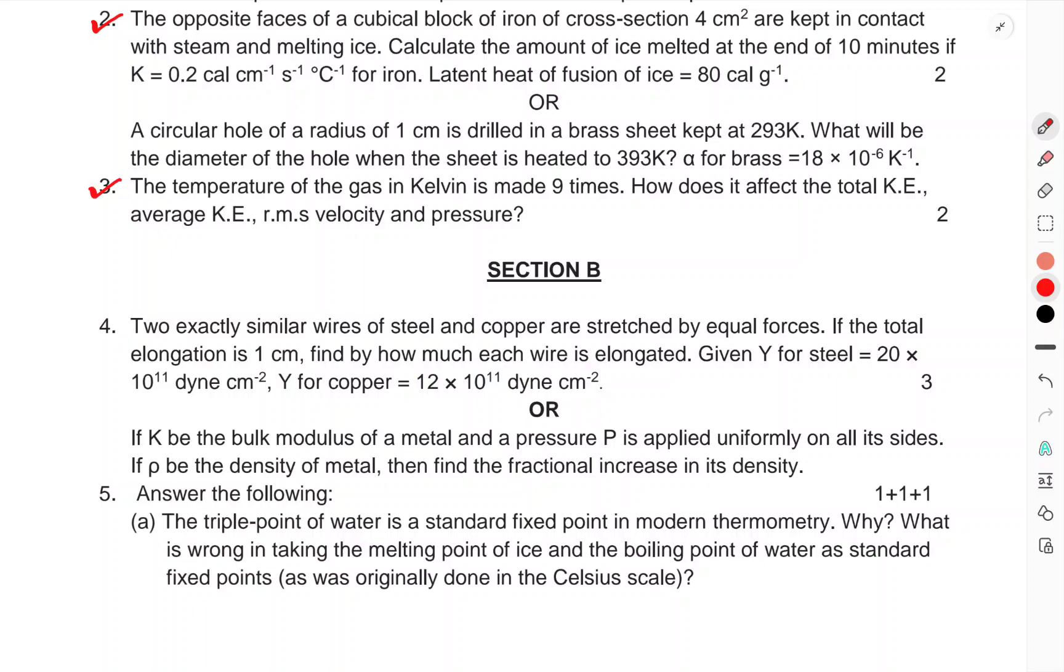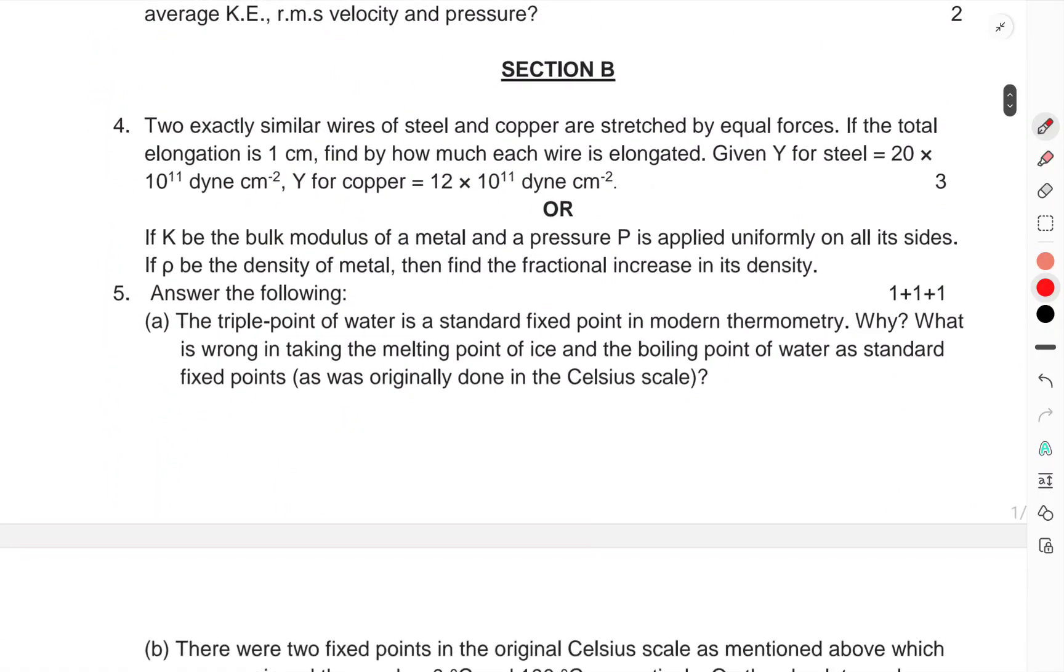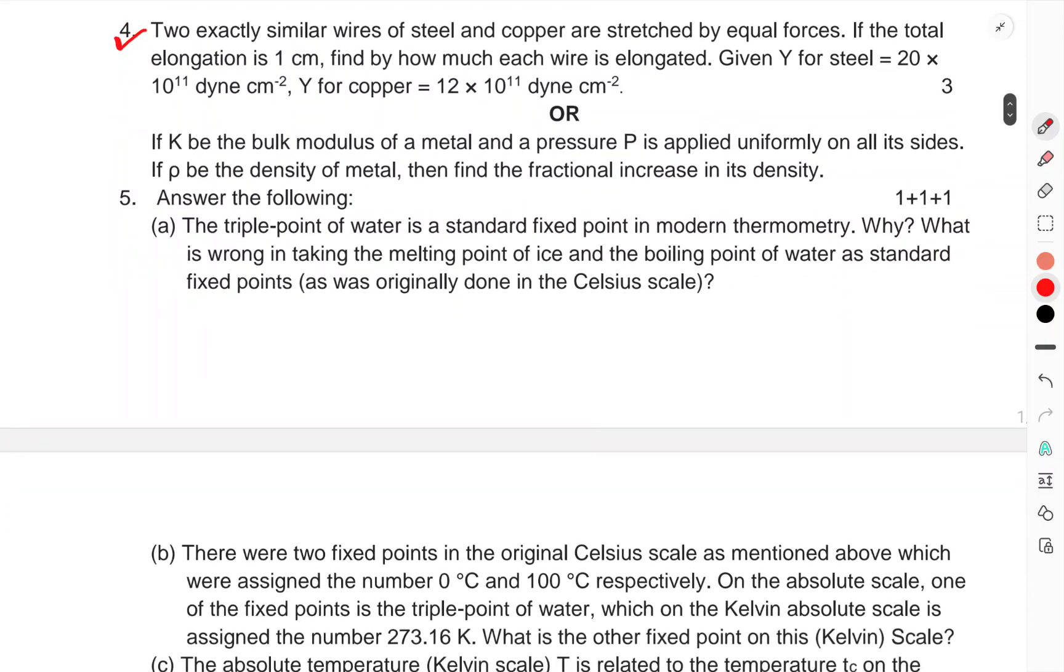Section B: Question 4, two exactly similar wires of steel and copper are stretched by equal forces. If the total elongation is 1 cm, find how much each wire elongated. Given Y for steel = 20 × 10¹¹ dyne/cm², Y for copper = 12 × 10¹¹ dyne/cm². OR, if K is the bulk modulus of a metal and a pressure P is applied uniformly on all its sides, if ρ is the density of metal, then find the fractional increase in its density.